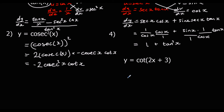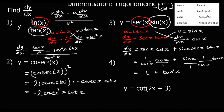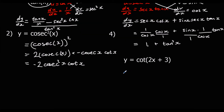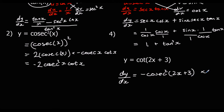Question four: y equals cot(2x + 3). Cot differentiates to minus cosec squared, so dy/dx is minus cosec squared(2x + 3), times by the bracket differentiated, which is 2. So the answer is minus 2 cosec squared(2x + 3).